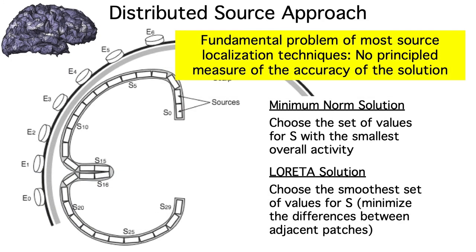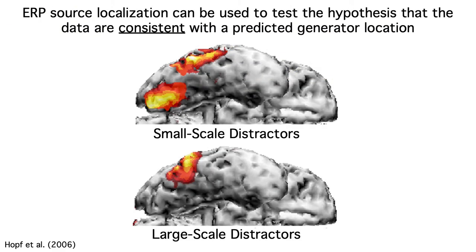The lack of a principled measure of accuracy doesn't invalidate all uses of source localization. Source localization methods can be useful for showing that the observed data are consistent with a given generator site, even if other source configurations might also be able to explain the observed data.